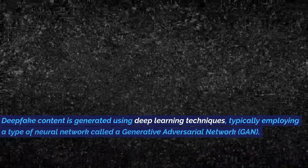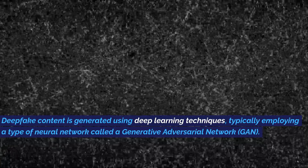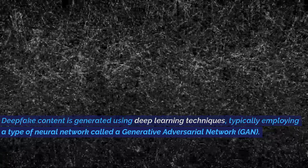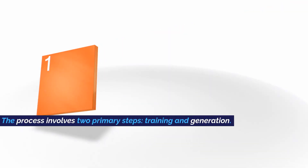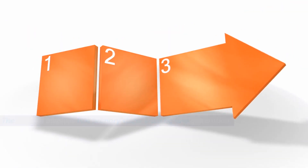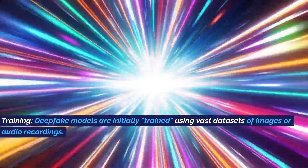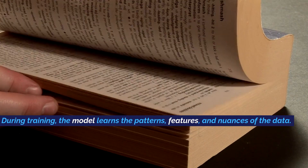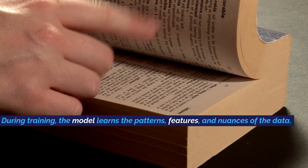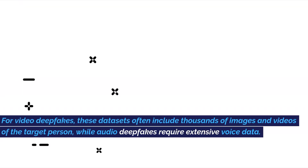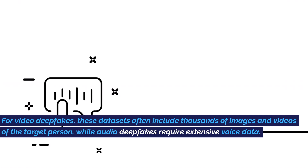Deepfake content is generated using deep learning techniques, typically employing a type of neural network called a Generative Adversarial Network (GAN). The process involves two primary steps: training and generation. During training, deepfake models are trained using vast datasets of images or audio recordings, learning the patterns, features, and nuances of the data. For video deepfakes, these datasets often include thousands of images and videos of the target person, while audio deepfakes require extensive voice data.